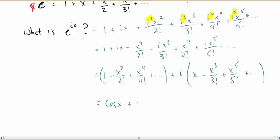And wouldn't you know, that's just cosine of x plus i sine of x. So e to the ix is equal to that.